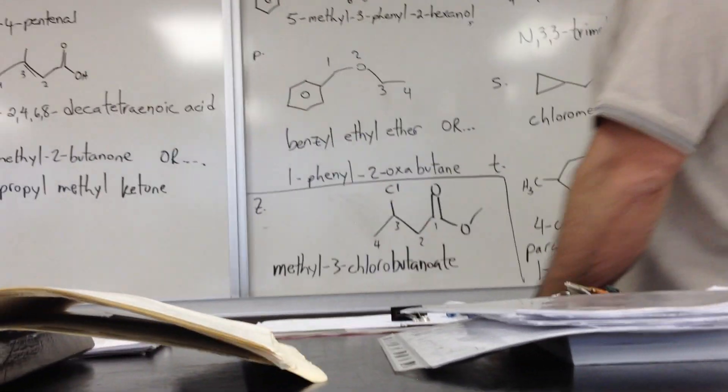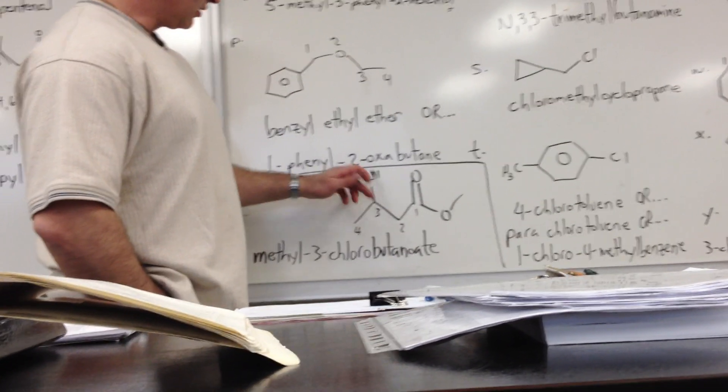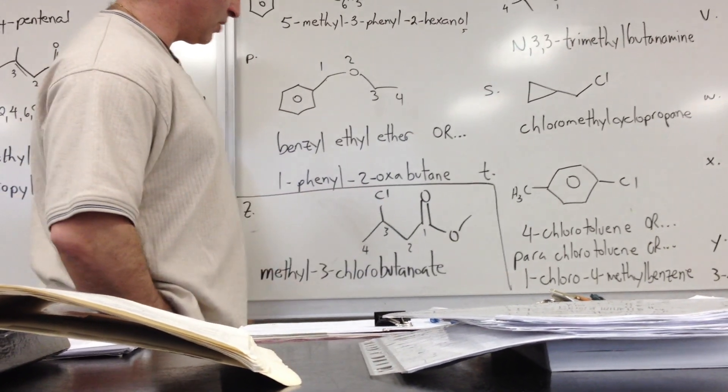In the last example, we have a molecule. It's an ester with a methyl substituent and a chlorine substituent on the main chain, so we call it methyl-3-chloro-butanoate.